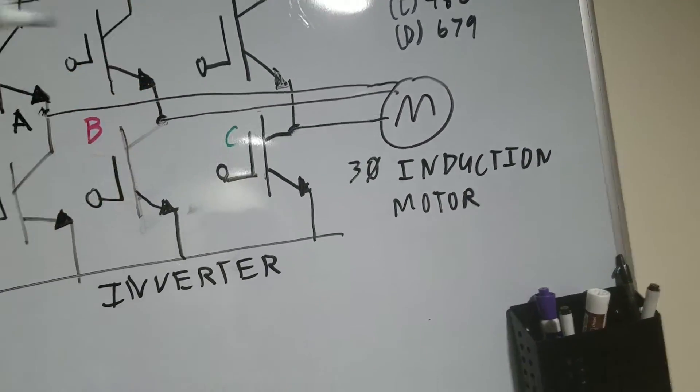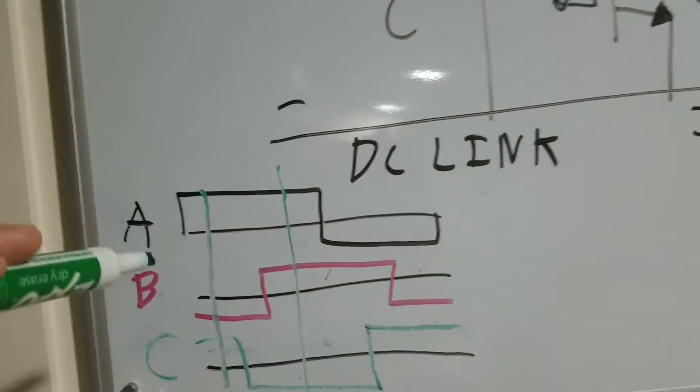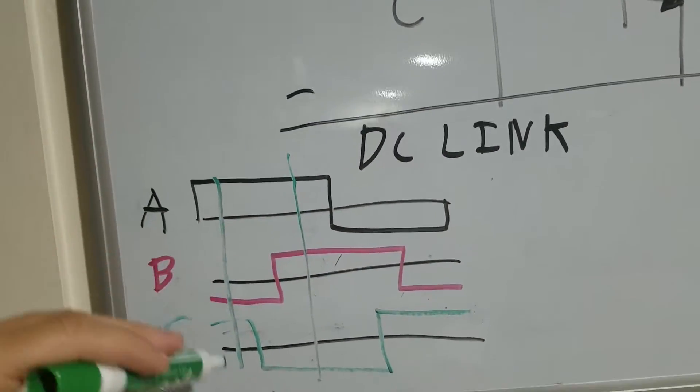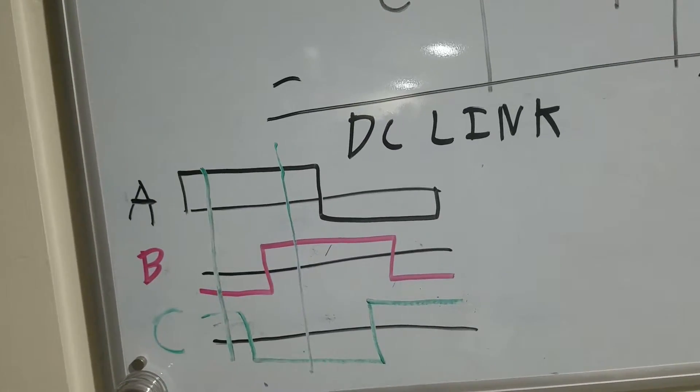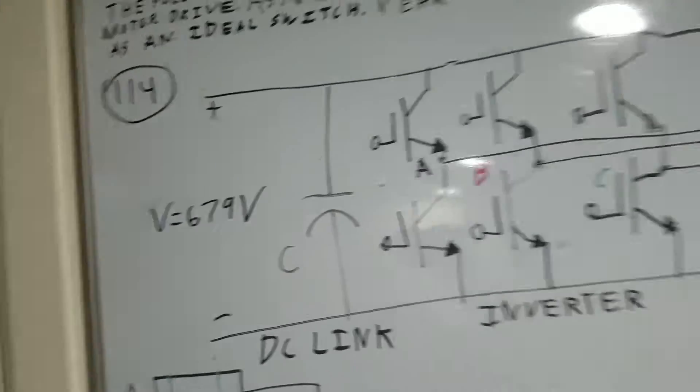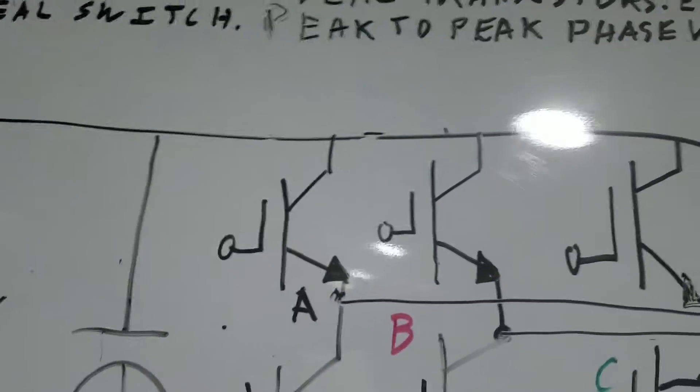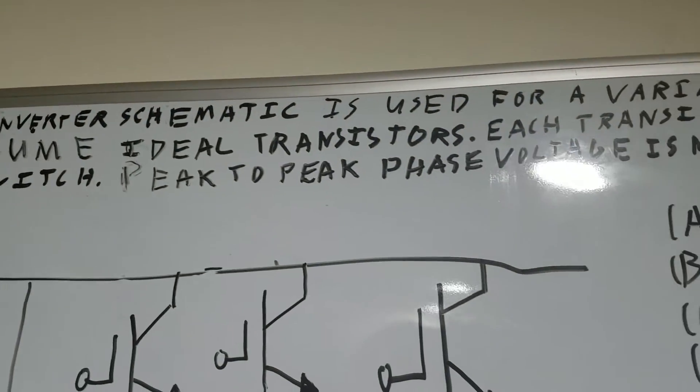And when you look at that, what that peak to peak difference is between A and B or C and B, you're going to find that it's the full 679 volts, and you can neglect any voltage drop across the transistors in this problem because you're assuming an ideal transistor.